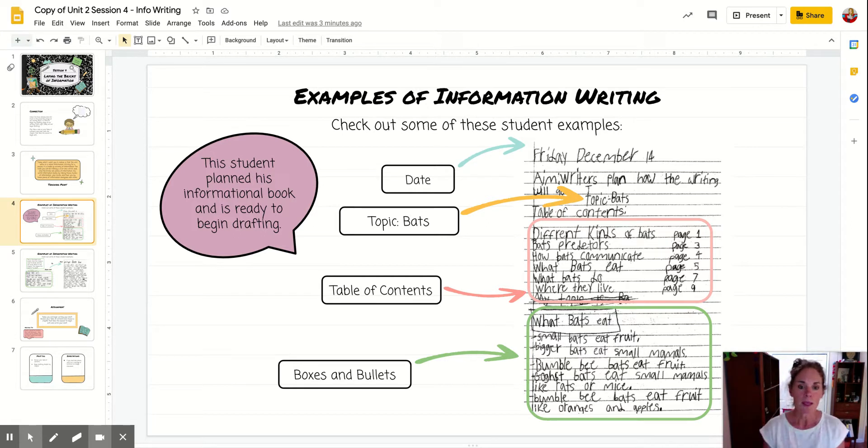You may have already done this. This was work from yesterday. He took one of the chapters, what bats eat. So he's taken his subtopic and now it's right in the middle. It's what bats eat. And he says they eat small bats eat fruit, bigger bats eat small mammals, bumblebee bats eat fruit, and he goes on. And so these are the things that he's going to put in his chapter about what bats eat.